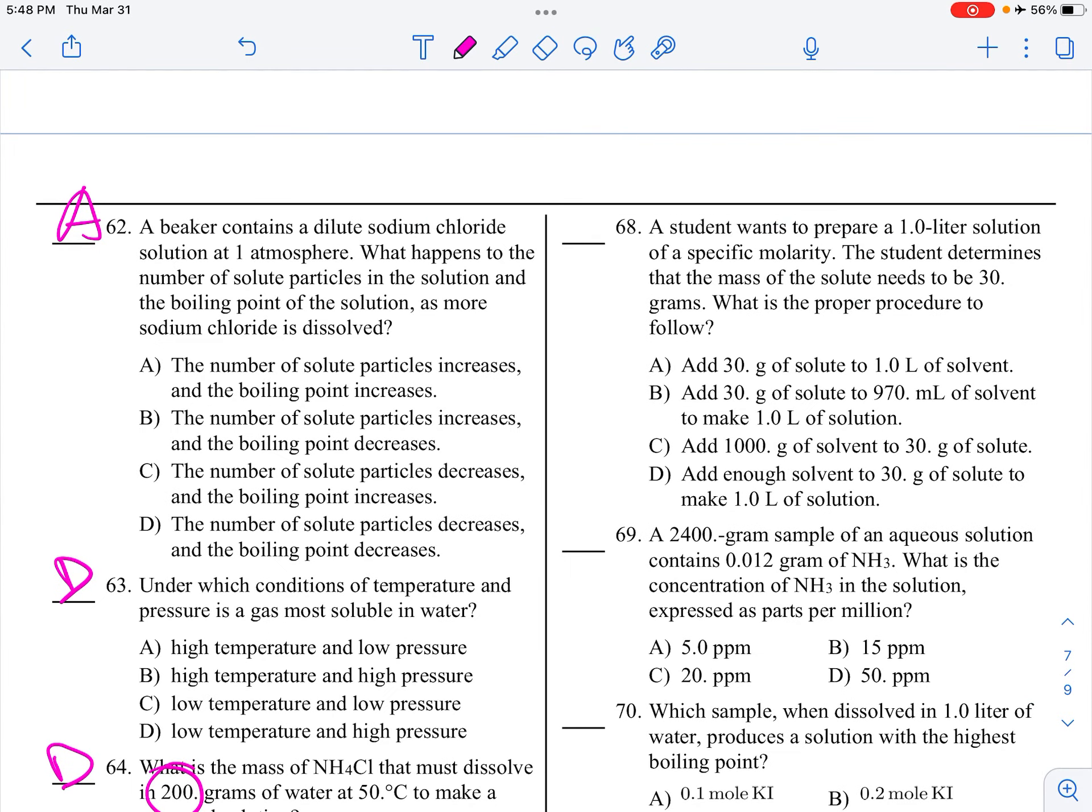A student wanted to prepare a 1 liter solution of a specific molarity, and the solute needs to be 30 grams. Just like in Kool-Aid lab, we put the solute in first. Then we add water up to the desired line. And then the last thing we would do is mix it all up. So you have to add enough solvent to the solute. This is solute to solvent. You don't want that. Solvent to solute could be, but it's too much. We don't know, it's not really 1000 milliliters, it's like 900 or whatever. So 68 is D.